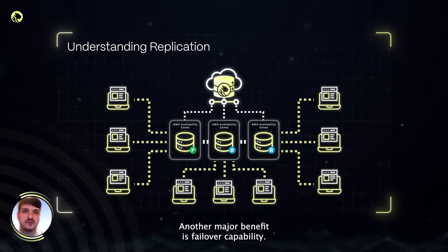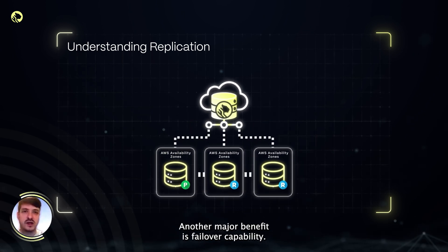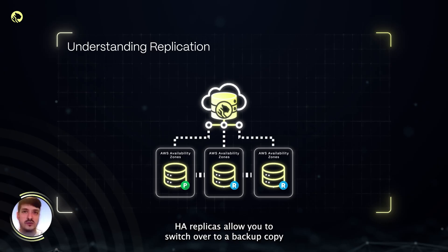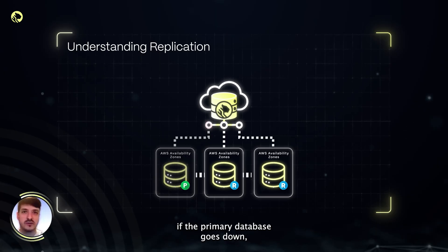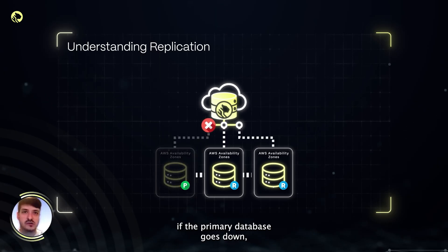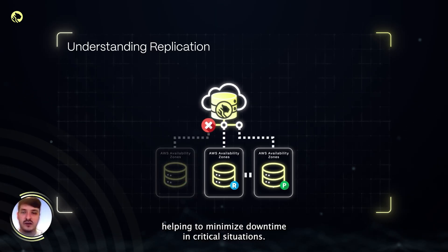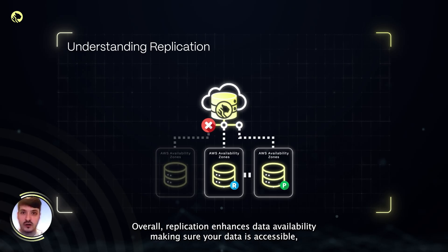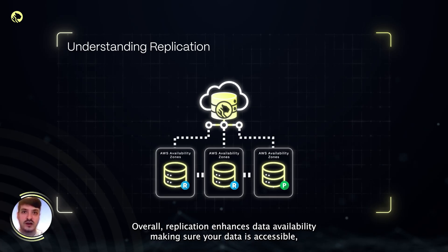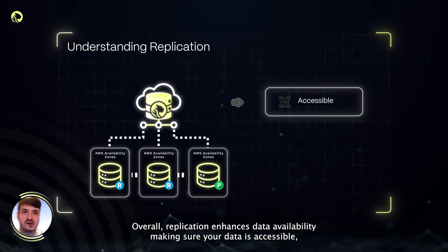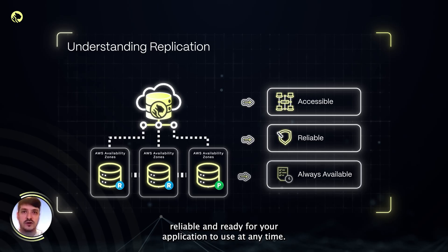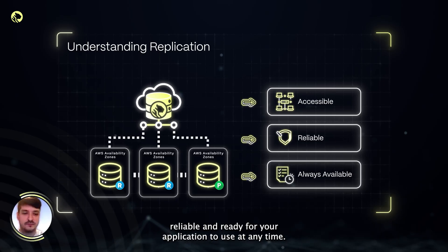Another major benefit is failover capability. HA replicas allow you to switch over to a backup copy if the primary database goes down, helping to minimize downtime in critical situations. Overall, replication enhances data availability, making sure your data is accessible, reliable, and ready for your application to use at any time.